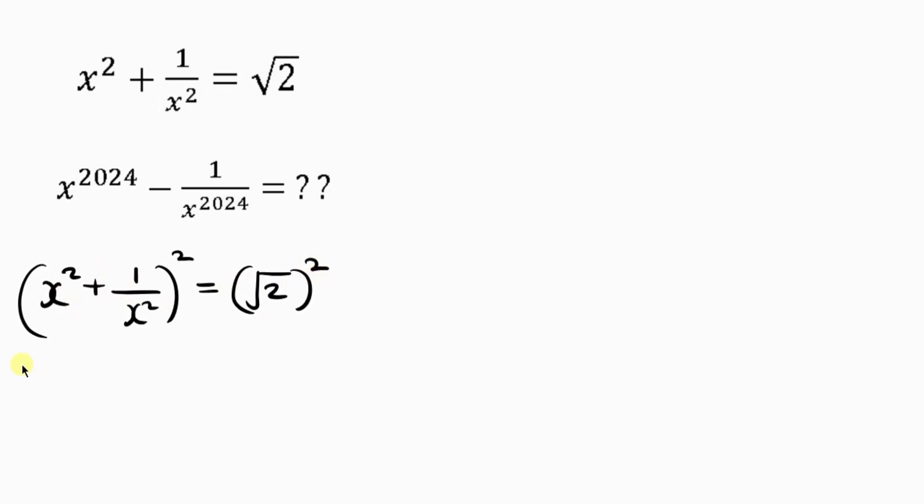So squaring the left hand side I'll be having x to power 4 plus 2 times x squared times 1 over x squared plus 1 over x to power 4 equal to, now looking at the right hand side you'll see that square is going to go out with the square root leaving behind 2. Now x squared here is going to go off with this x squared. So I have the remaining expression as x to power 4 plus 2 plus 1 over x to power 4 equal to 2.